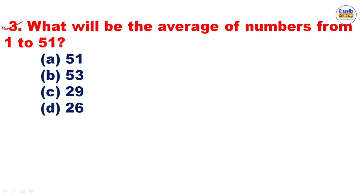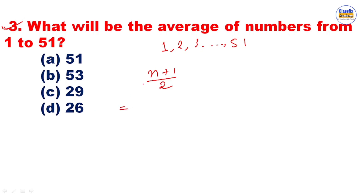This type of question you will get in competitive exams — Assam TET, Assam Police, and other competitive exams. The question is: what will be the average of numbers from 1 to 15? Since it is a serial natural number from 1, 2, 3 up to 15, we use the formula n plus 1 divided by 2. Here n is equal to 15, so the answer is 15 plus 1 divided by 2, which equals 8.